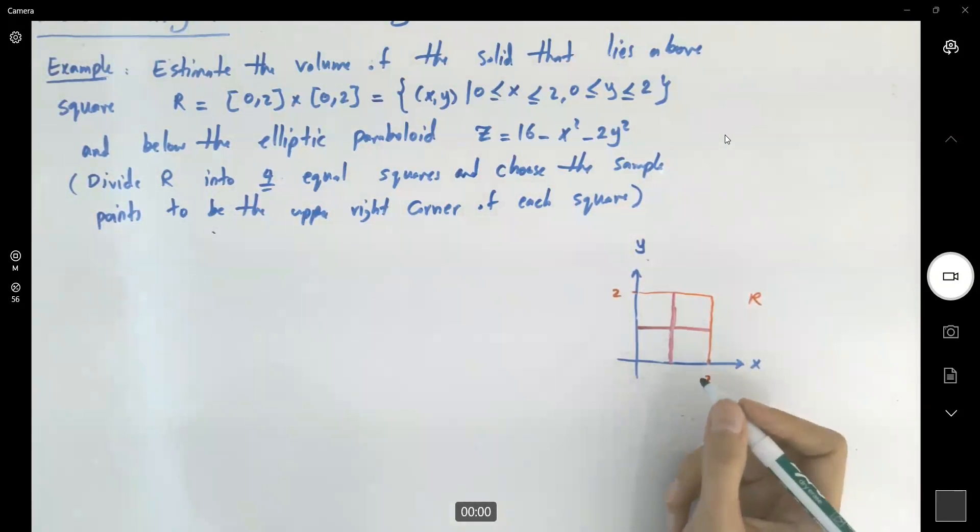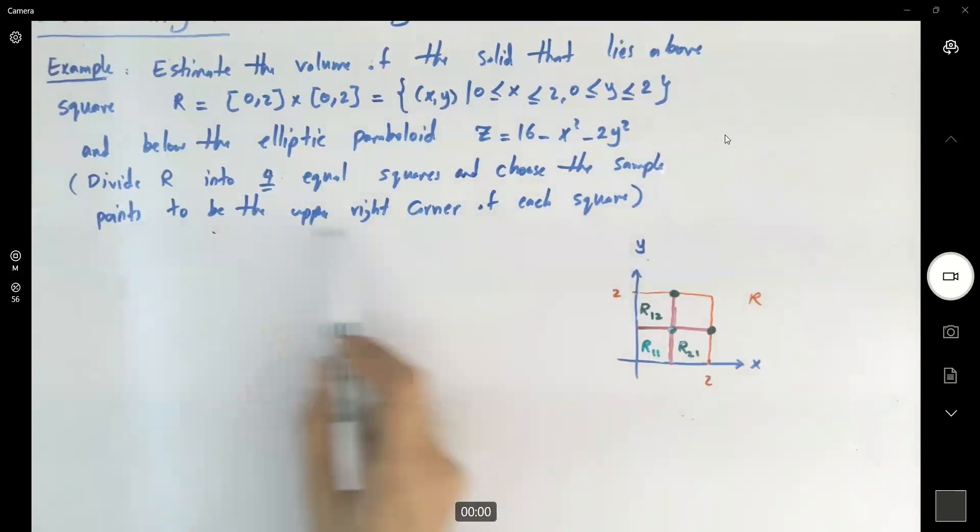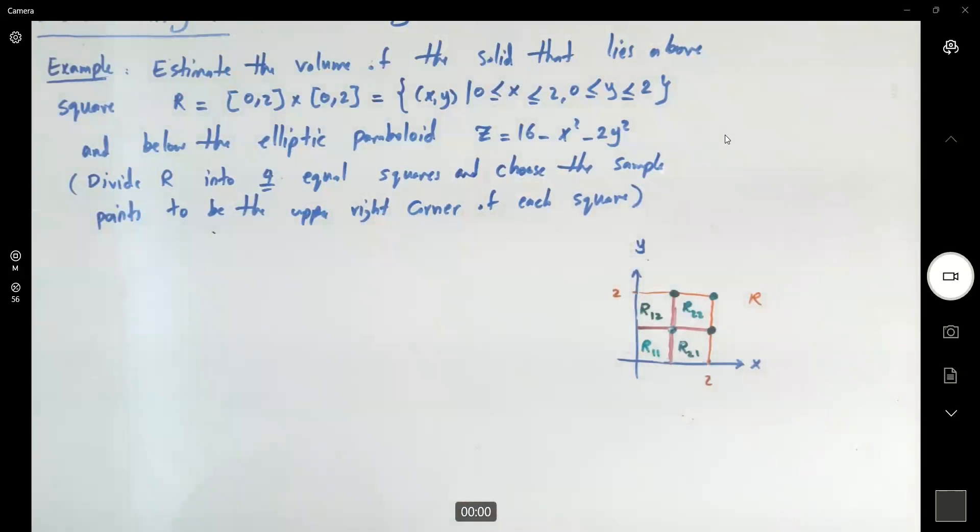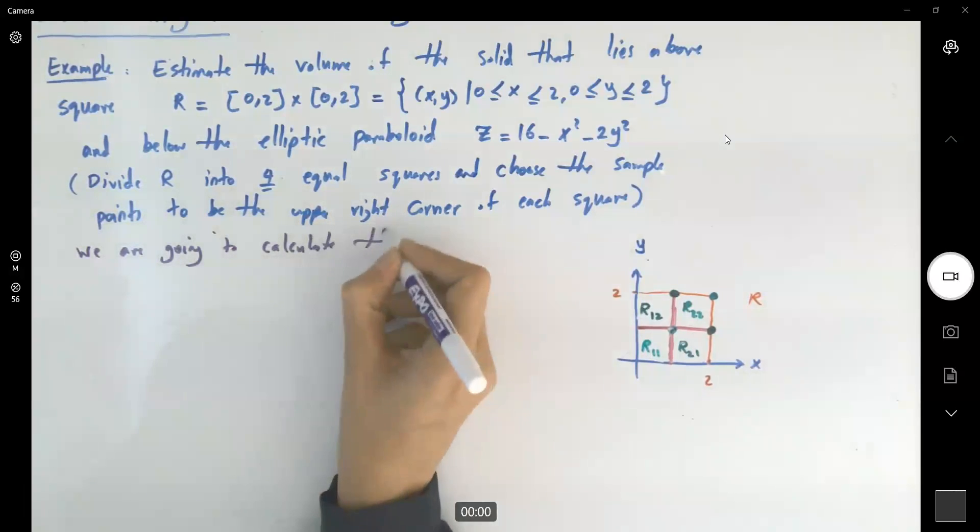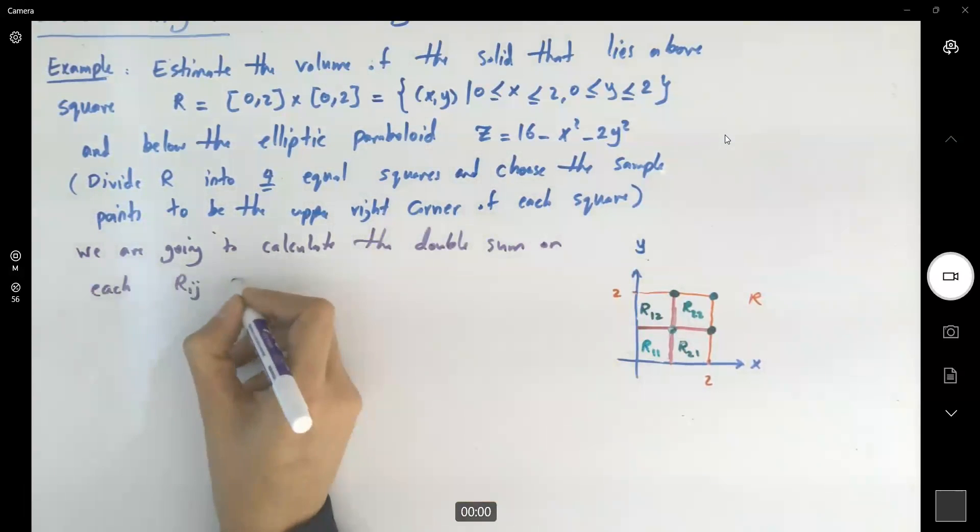So we're dividing R into four subsections. The very first subsection, let us call it R sub 1 and 1 representing this point. Then R sub 2 and 1 representing this point. And then R sub 1 and 2 representing this point. Because the question says, choose the sample points to be the upper right corner points. And this guy R sub 2 and 2. What are we going to do on each of these subsections? We're going to calculate the integral, double integral and add them together. So this is our goal.